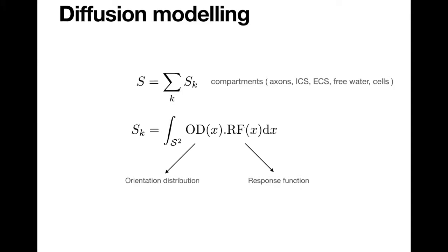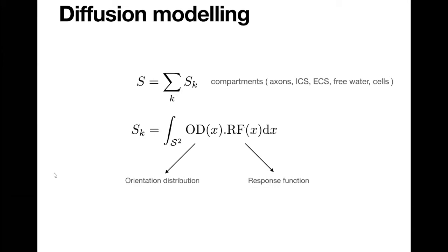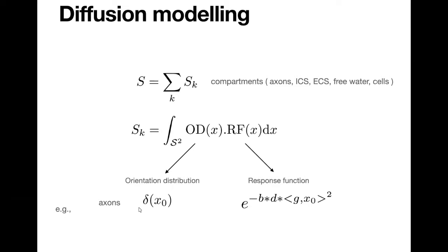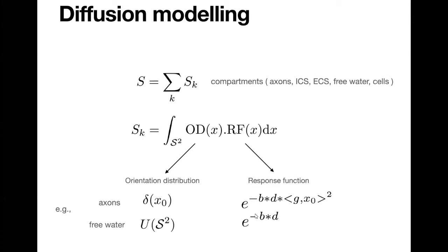Each of these compartments can be modeled as a convolution of something called the orientation distribution and something called the response function. The response function is just what does the signal look like in each of these compartments, and if that signal depends on the gradient orientations of our diffusion encoding, then we convolve by this orientation distribution. For example, we might have a model where the orientation distribution is a delta along a single orientation modeling axons all running in the same direction, and the response function is something Gaussian-like, which exponentially decays as a function of the B-value, diffusion coefficient, and the angle with the gradients. Or the orientation distribution could be uniform on the sphere, and the response function is just an exponential decay — a model for free water or any isotropic diffusion.